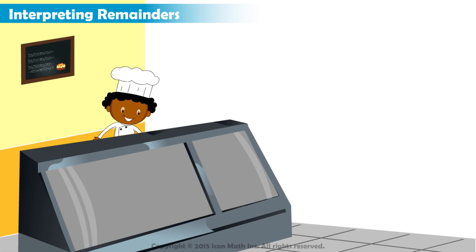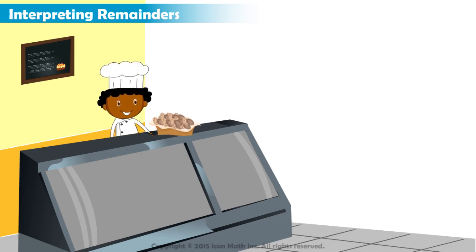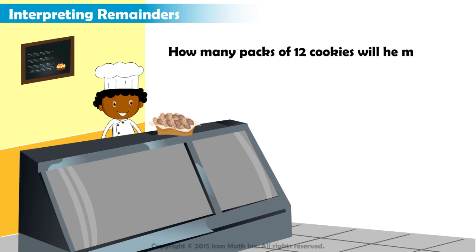Let's look at the second case of interpreting remainders. Malik the baker sells cookies in packs of 12. Today, he made 165 cookies. How many packs of 12 cookies will he make?